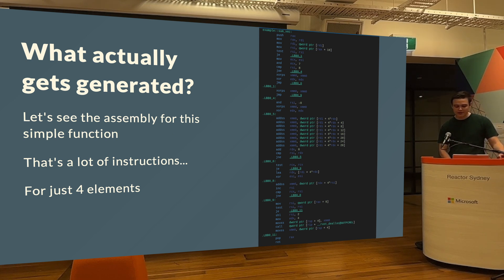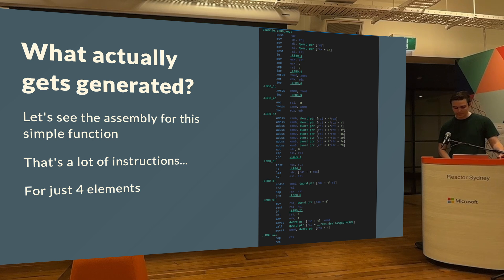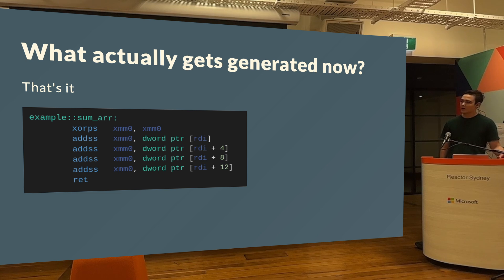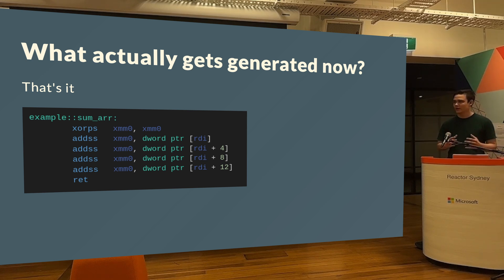But we're only summing four elements, so let's change it to a fixed-size array of four. Here is the resulting code. The compiler knows your loop is actually just four iterations, so it can flatten the loop out into a couple of sum calls to quickly add them up and return the value.